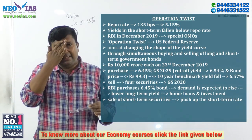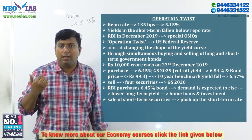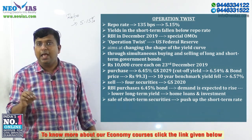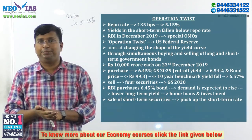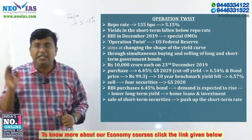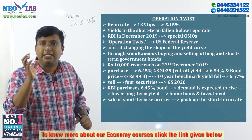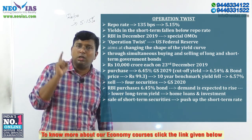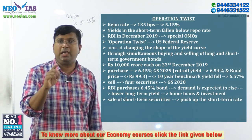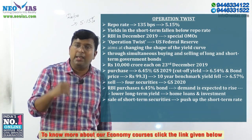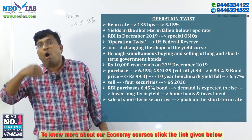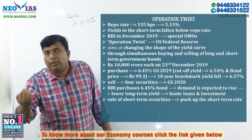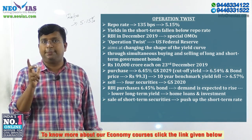Normally in open market operations, RBI either buys or sells government securities. But in Operation Twist, RBI simultaneously buys and sells government securities — that is the key feature. Specifically, RBI buys long-term government securities and sells short-term government securities at the same time.